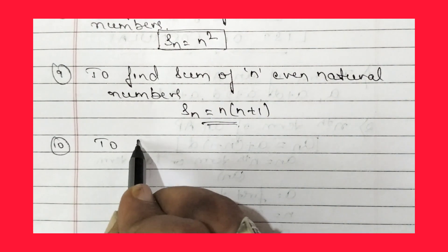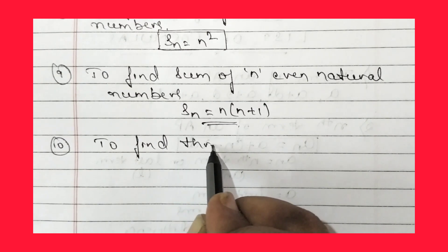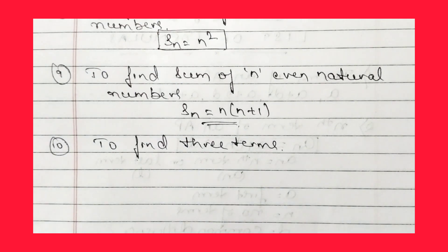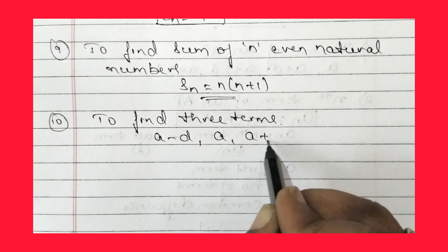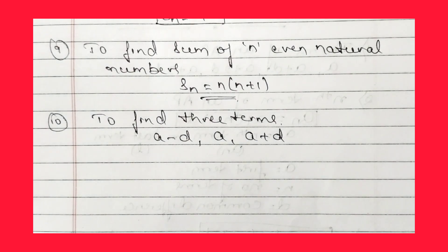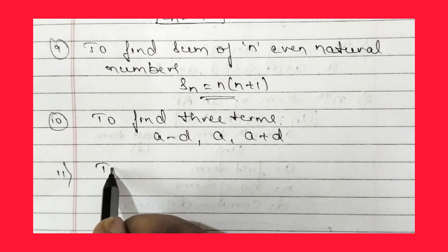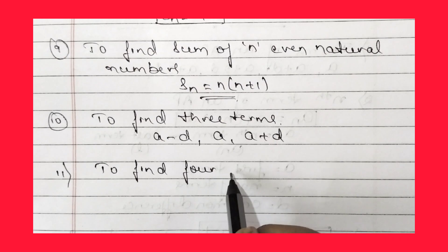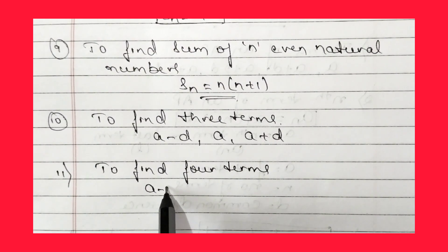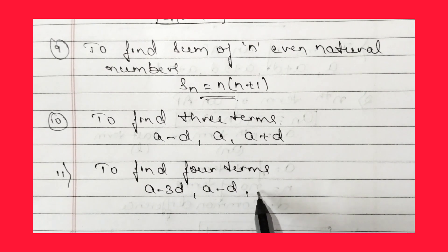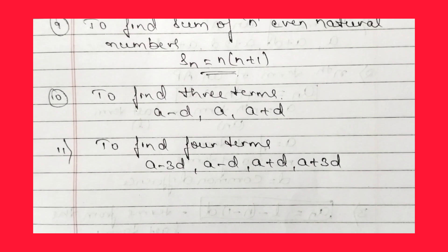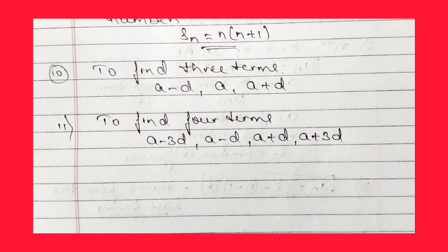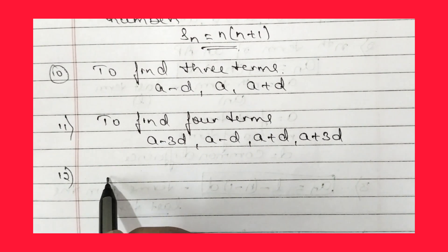The tenth formula: when the sum and product of three terms is given, assume the three terms as (a-d), a, (a+d). The eleventh formula: to find four terms of an AP, use (a-3d), (a-d), (a+d), (a+3d).